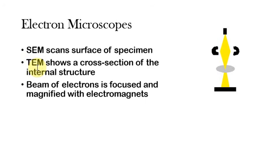Now the difference between them is pretty subtle, but essentially scanning electron microscopes scan the surface of the specimen, whereas transmission electron microscopes show a cross-section of the specimen's internal structure. There's a whole process that's involved in preparing the specimen, and it's different for each of them, but that's not really very relevant. But what is important to note is that rather than glass lenses, you have electromagnets which focus the beam of electrons.